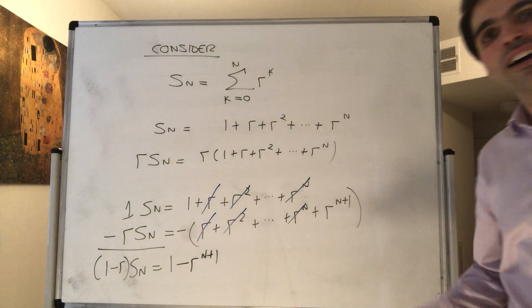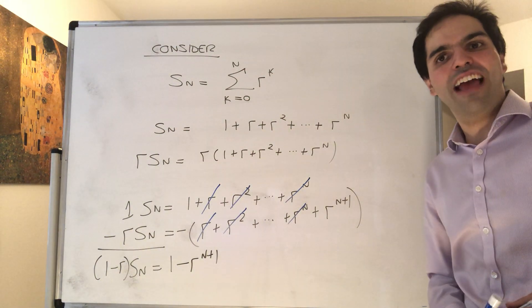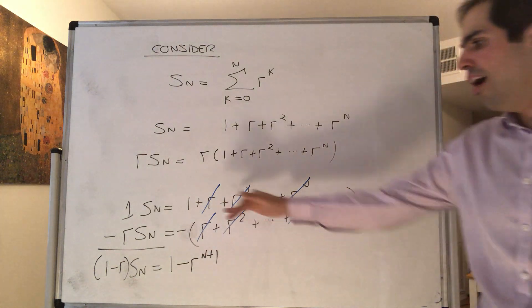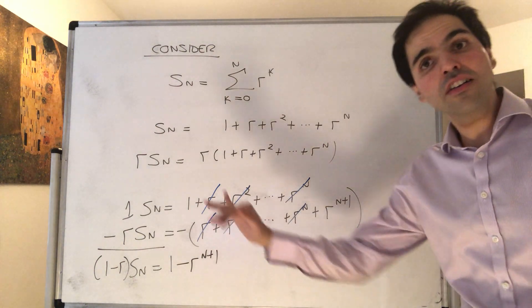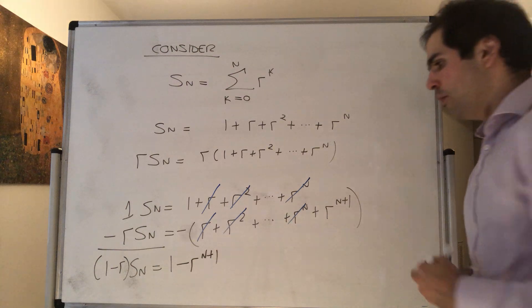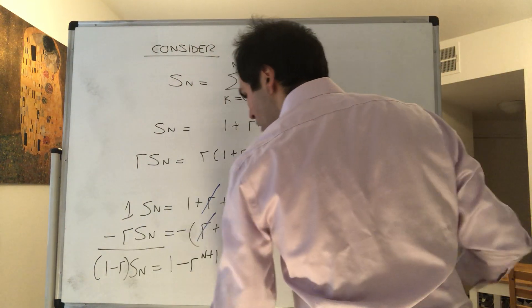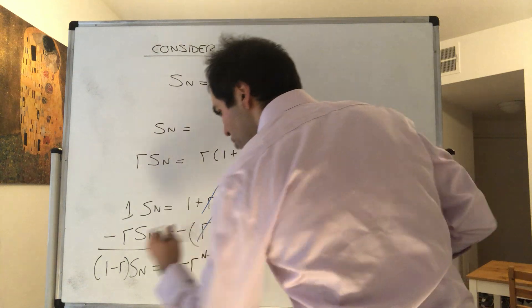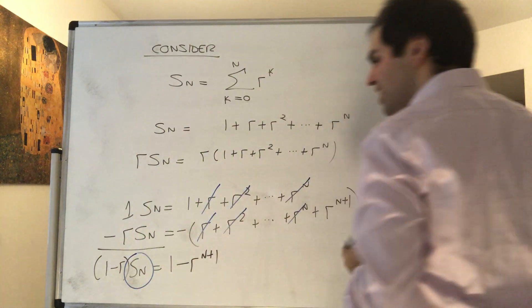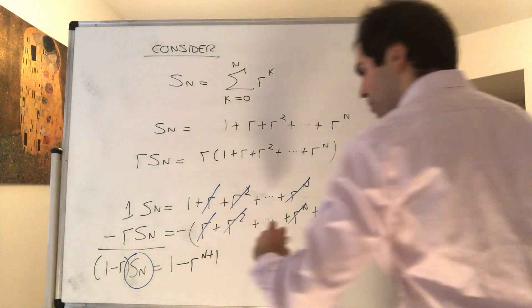It's almost like a fundamental theorem of calculus vibe going on. All the middle terms cancel out and you're just left with the endpoints. And then what do we get? We get (1-r)*S_n equals 1 minus r to the n plus 1.